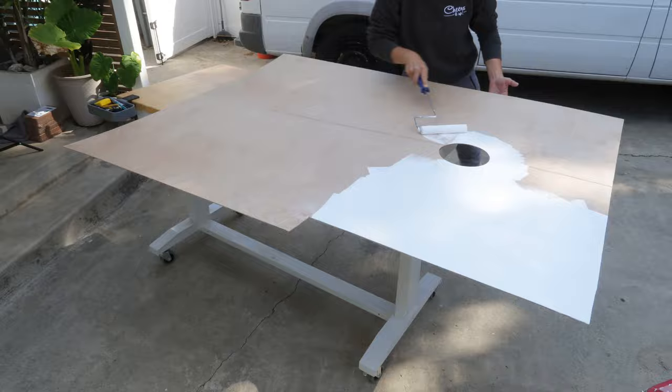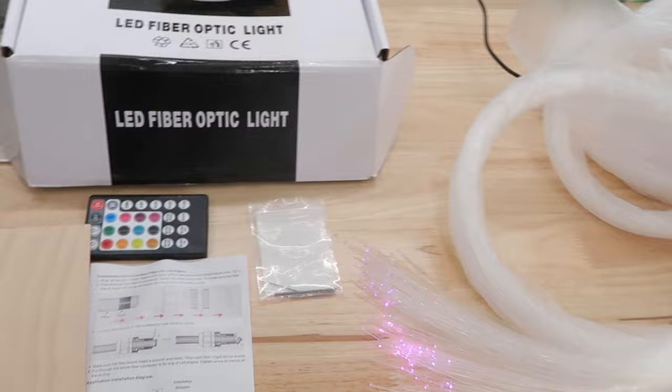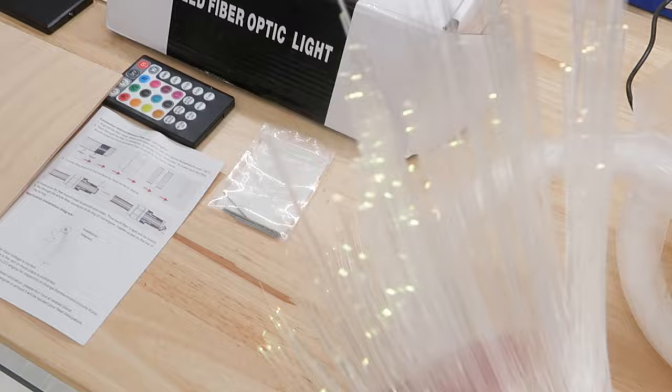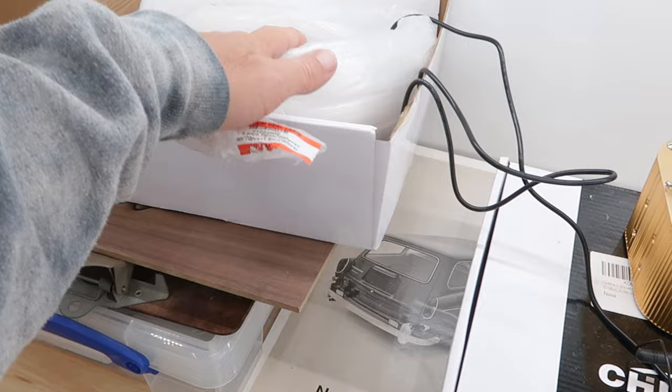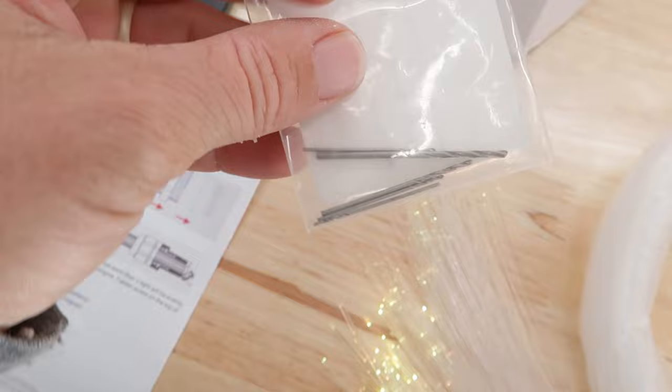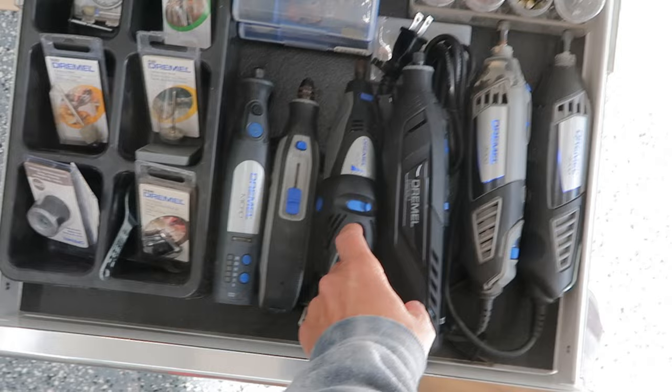Alright, now we're finally to the fun part of the project: adding in the fiber optic LED lighting. There's 300 strands on this set and 300 strands on this set, so 600 total. It also came with some drill bits. These drill bits are really small so I'm going to have to use a Dremel. Thankfully I have a lot of Dremels on hand, don't ask why I have so many, but I think for this project we'll go with the cordless and I'll just pull out three of them that way we have three ready to go with the three different sizes.